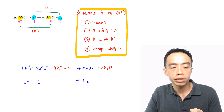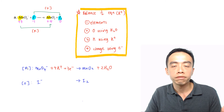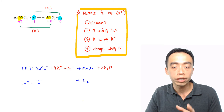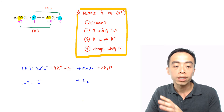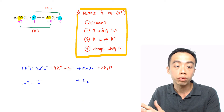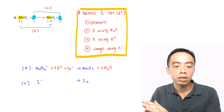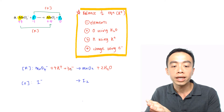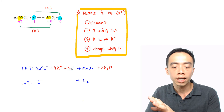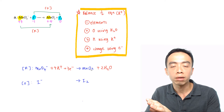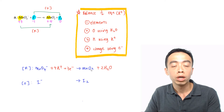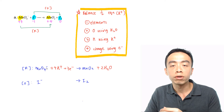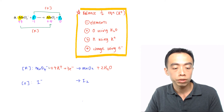A way to check: reduction is defined as the gain of electrons, so I would expect the electrons to be found on the left-hand side of the half equation. MnO4- gains these electrons to become MnO2, so MnO4- is reduced.